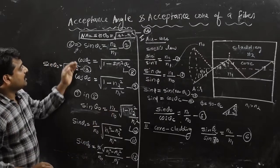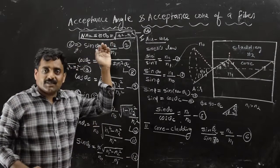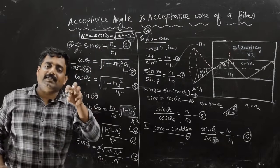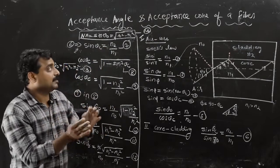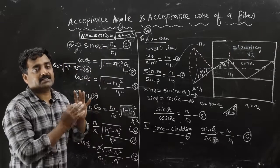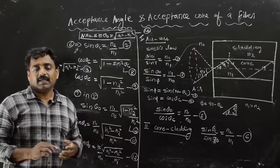So theta 0 is the acceptance angle, and its two-dimensional solid angle gives the acceptance cone.